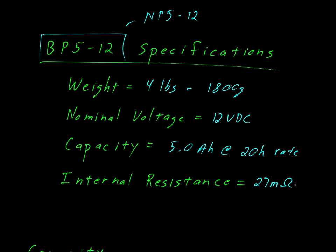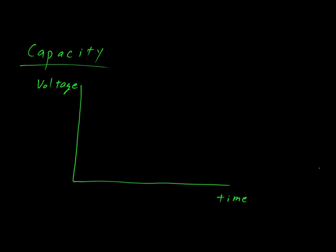To better understand these specifications, let's first look at what we mean by capacity. Here we see a curve where we have time on the horizontal and voltage on the vertical axis. When you first connect the battery up to a load, there will be an initial voltage drop. Then the battery voltage will maintain fairly constant for a period of time, and then it will start to drop at the end. So here we say that 12 volts is the nominal voltage of the battery. That's where it stays for most of its life. And we reach this point here down at 10.5 volts, and we say this is the discharge point for the battery.